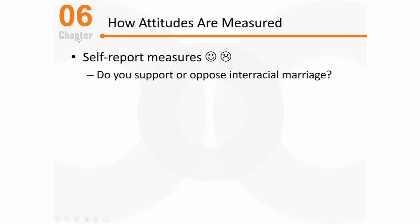Let me give an example first. If I'm trying to assess someone's attitude regarding interracial marriage, I might just ask them flat out: do you support or oppose interracial marriage? Instead of simply giving them those two options — support or oppose — I need to realize that people's attitudes are often of varying degrees.